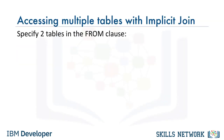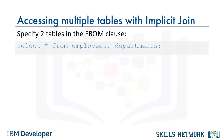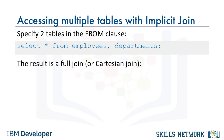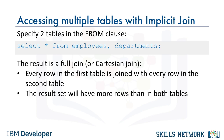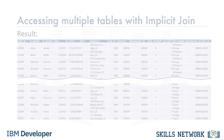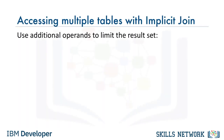We can also access multiple tables by specifying them in the FROM clause of the query. Consider the example: SELECT * FROM employees, departments. Here we specified two tables in the FROM clause. This results in a table join, but note we are not explicitly using the join operator. The resulting join in this example is called a full join or Cartesian join because every row in the first table is joined with every row in the second table. If you examine the result set, you will see more rows than in both tables individually.